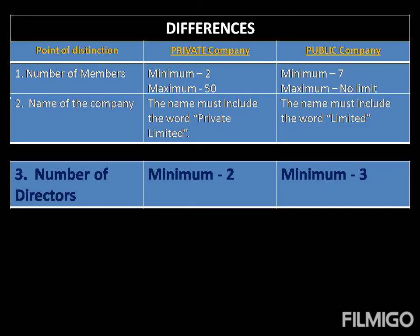Another point of difference is with regards to the number of directors each can have. The minimum is clearly visible on the screen as 2 for a private company and 3 for a public company.